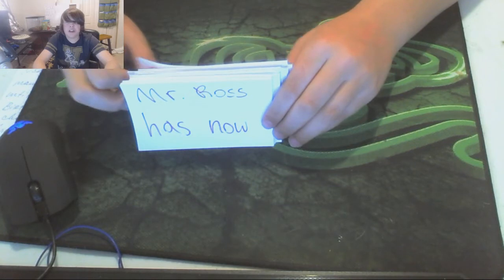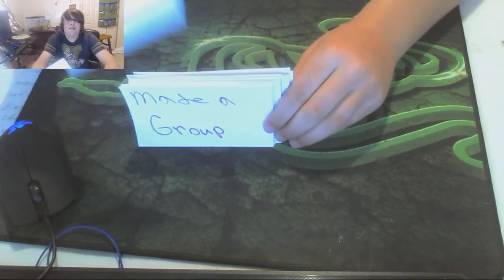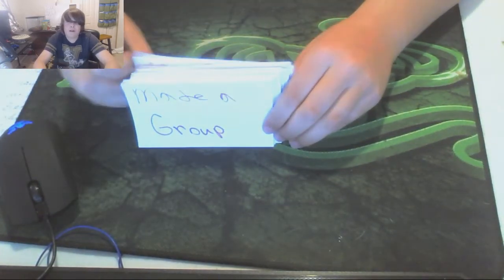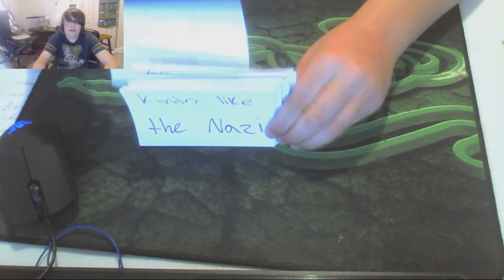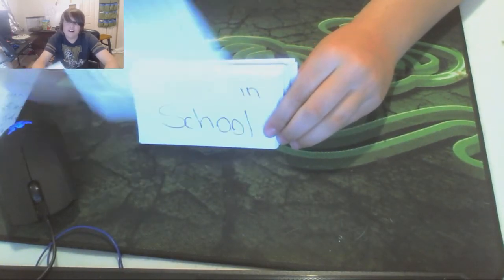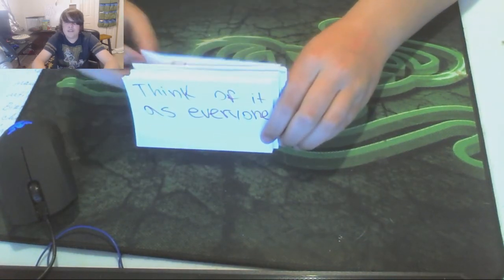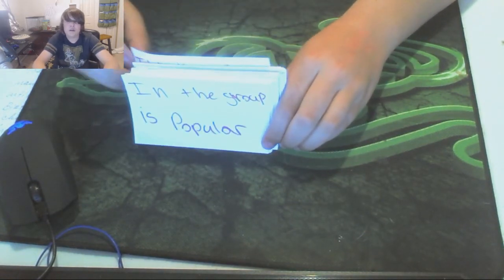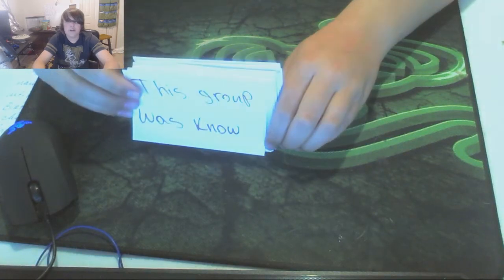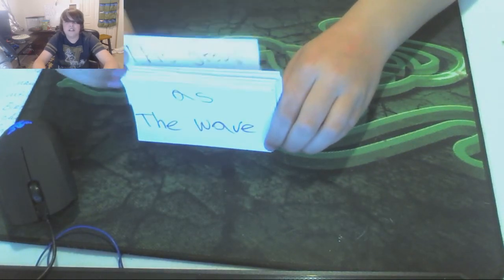Mr. Ross has now made a group, kind of like the Nazis but in school. Think of it as everyone in the group is popular. This group was known as The Wave.